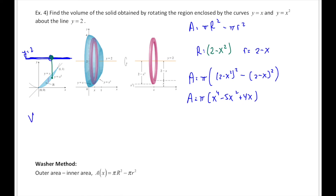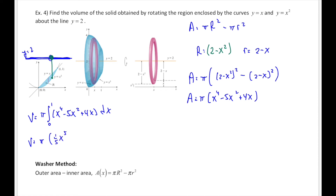We can integrate this. Volume is π times the integral from 0 to 1 of (x to the fourth minus 5x squared plus 4x) dx. Volume is then π times [one-fifth x to the fifth minus five-thirds x cubed plus 2x squared] evaluated from 0 to 1. Substituting in and working through the common denominators and fractions gives us a volume of 8π over 15 cubic units.